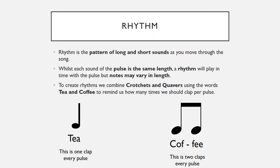To create rhythms, we combine crotchets and quavers. To help us remember these rhythms, we use the words tea and coffee. A crotchet is on the left — we use the word 'tea.' Because it's only got one syllable, we clap once: Tea. On the right we have 'coffee,' which has two syllables — co-fee — so we clap twice, once for 'co' and once for 'fee.' So for every pulse you either clap tea or coffee. Tea is one clap; coffee is twice as fast, two claps. Then we mix those up to create rhythms.